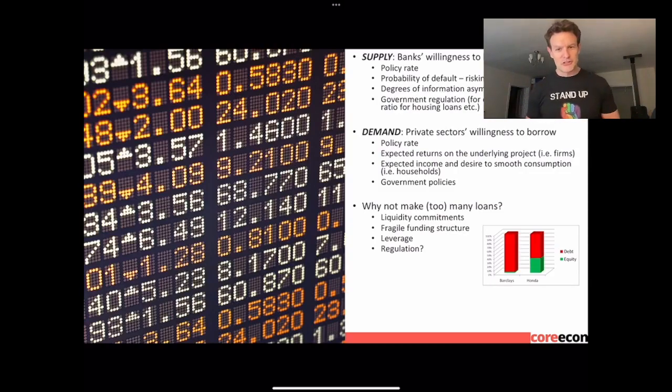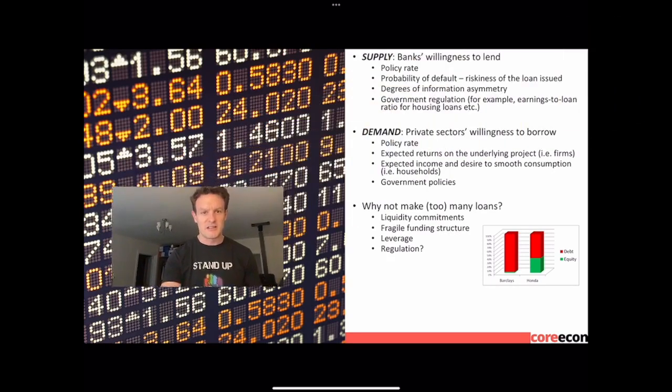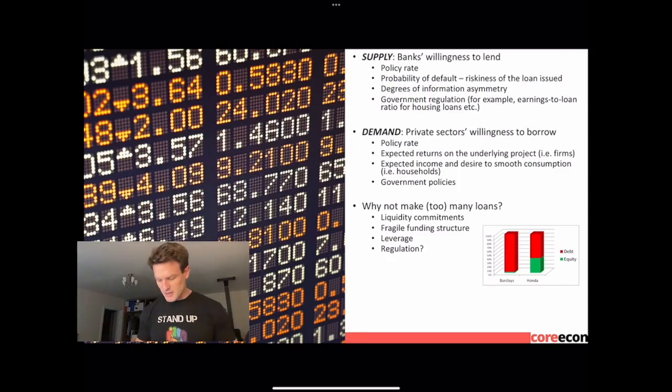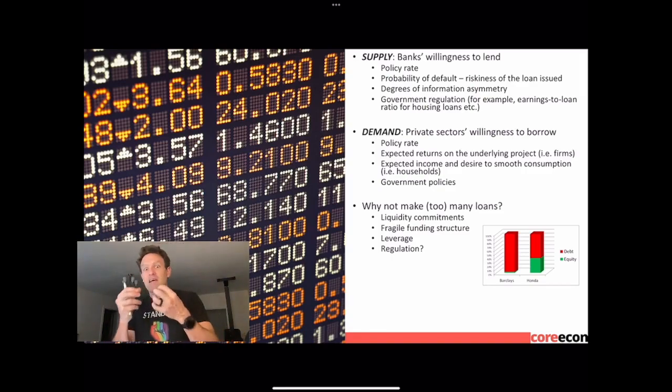A few things to note here that we're just trying to quickly summarize. We have the bank's willingness to lend. This depends on a whole variety of ideas. We've got the policy rate for the central bank. We've got the probability of default and the riskiness of loans issued. We have the degree of information asymmetry. So depending on how big that information asymmetry is between the different parties involved, the creditors and the borrowers and the lenders, that's a really important part of what we want to think about with whether or not we're going to get paid back. We've also got government regulations. That 10% ratio of keeping reserves in with the central bank, that's really crucial here to think about what can go on.